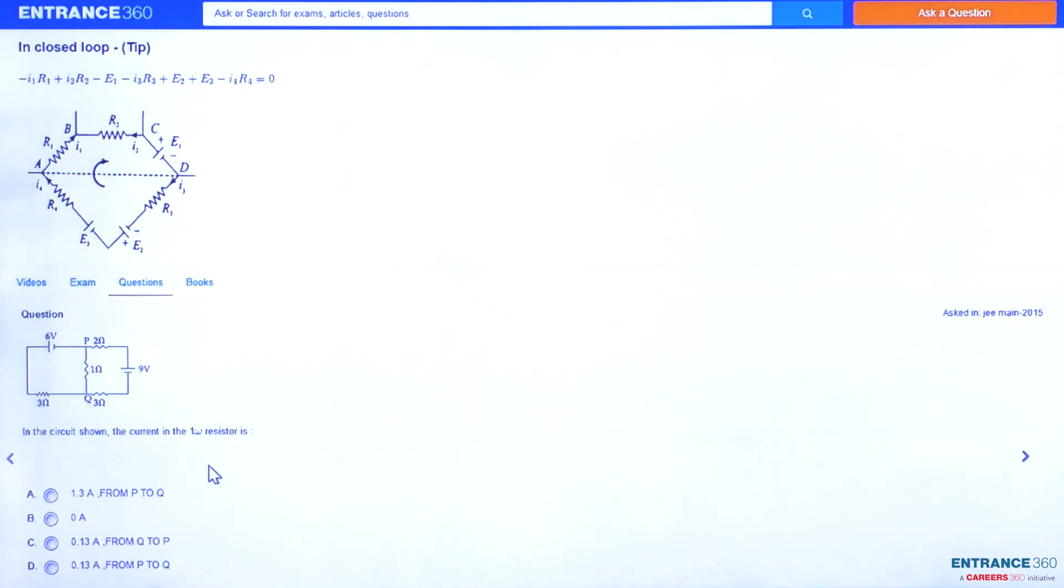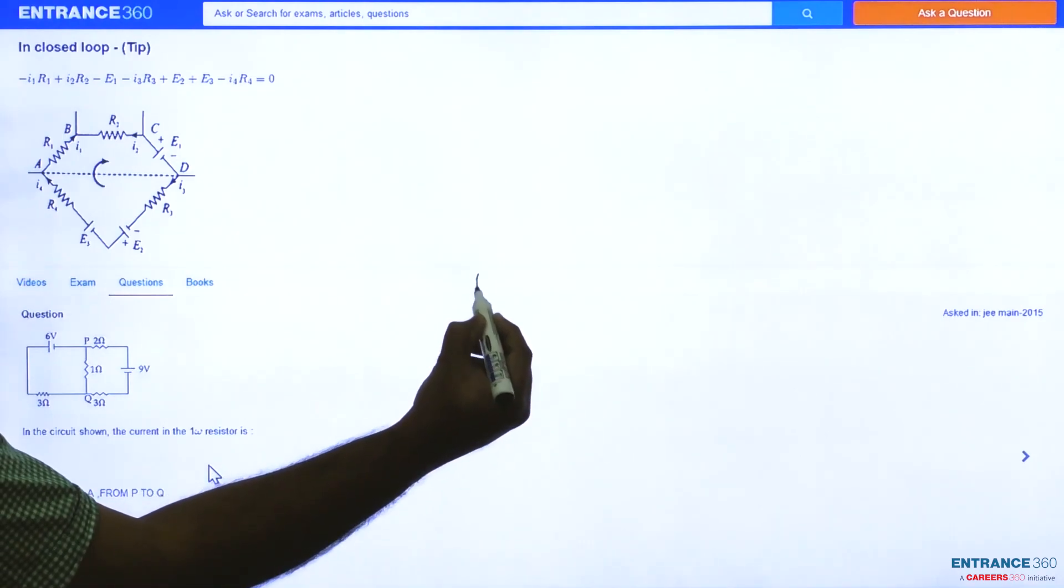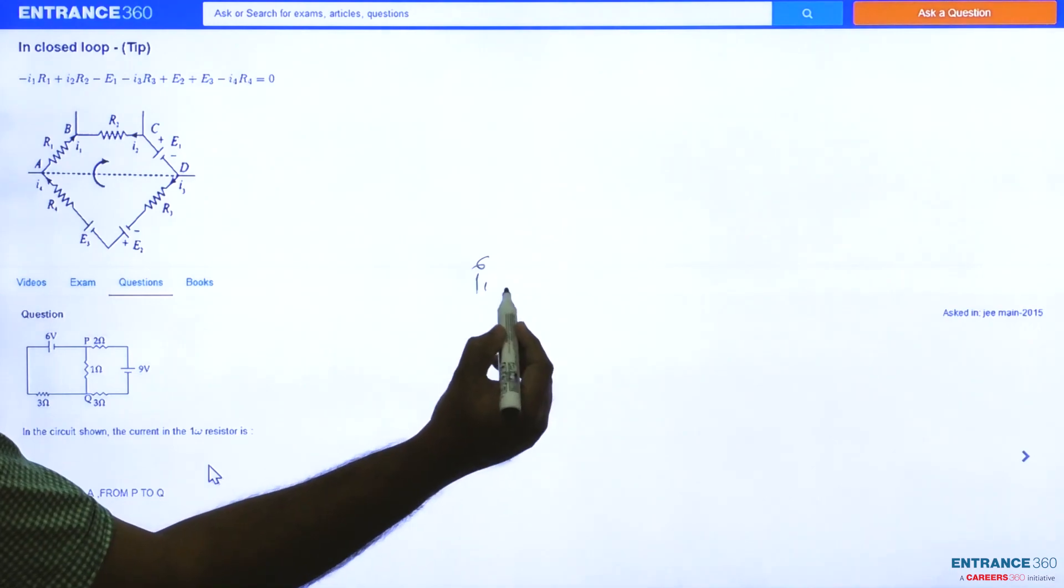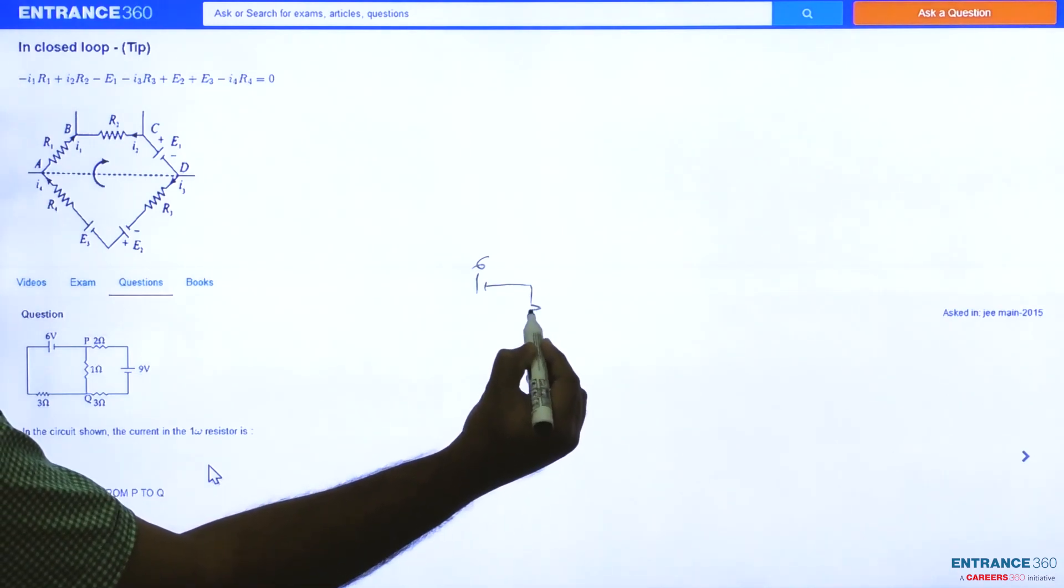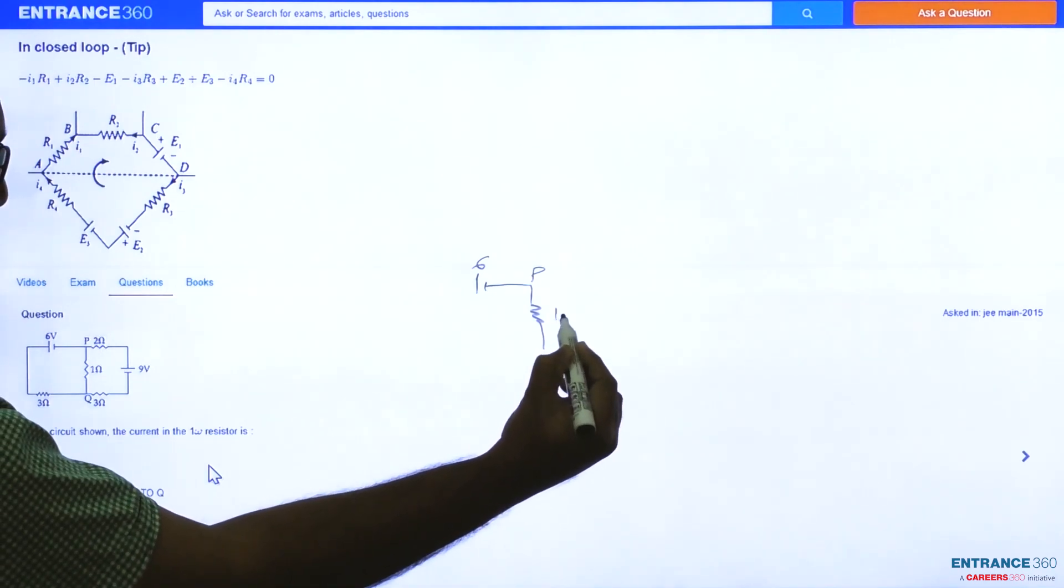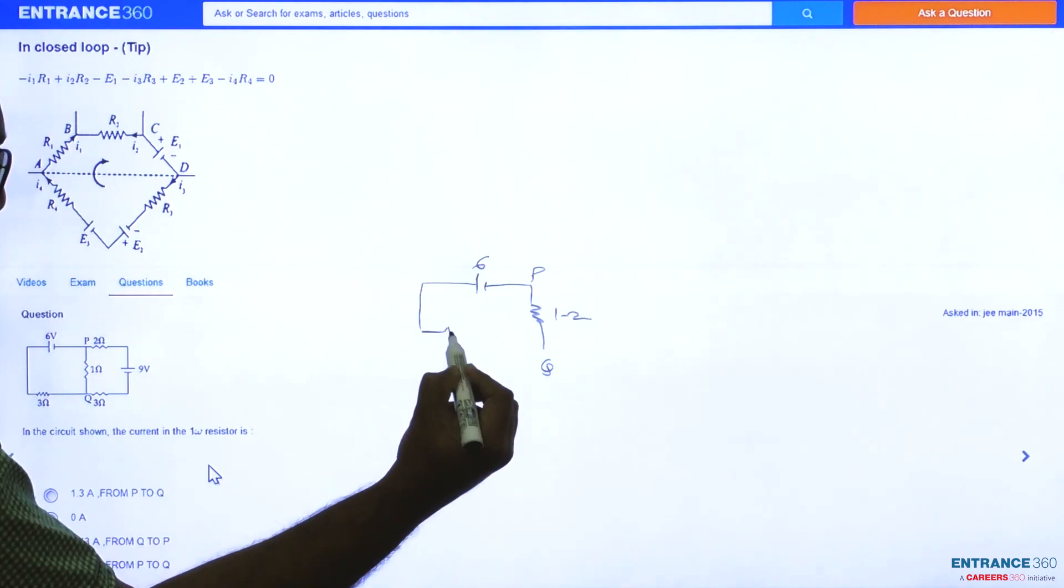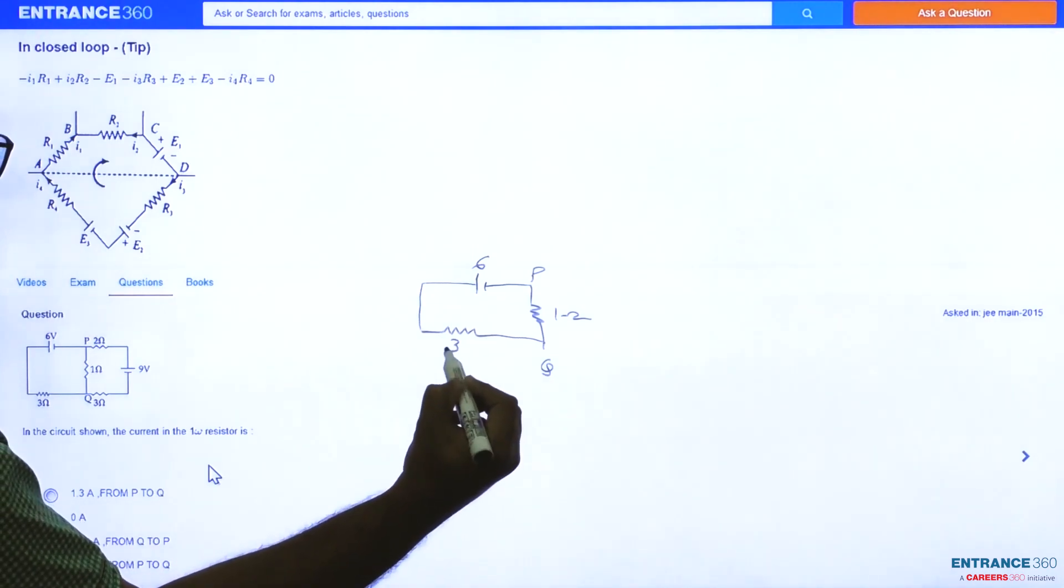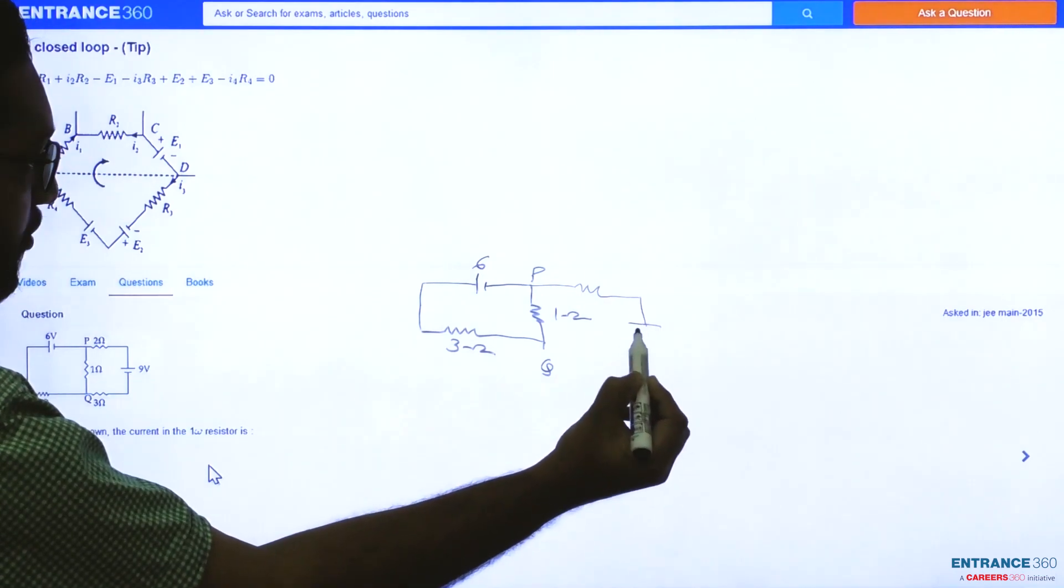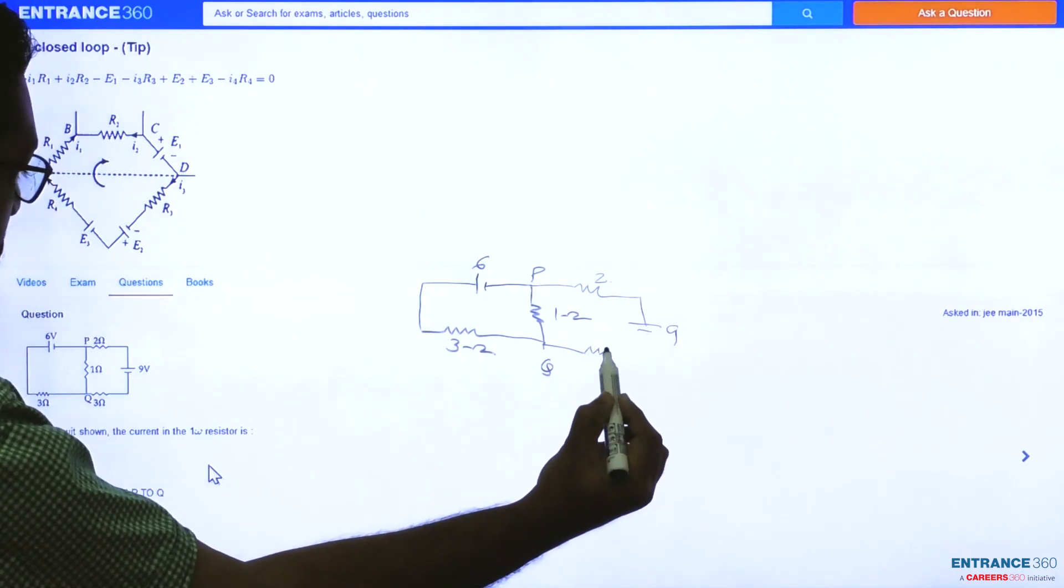Before proceeding to the solution, let's redraw the circuit here. A six volt battery, there is a point P and Q. In between we have one ohm resistance. We have to find out the current through that one ohm resistance, three ohm, two volt, and three ohm.